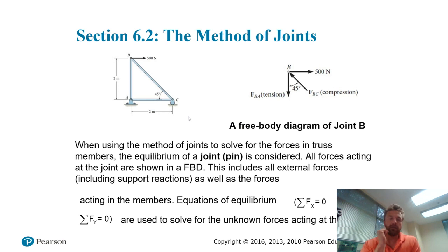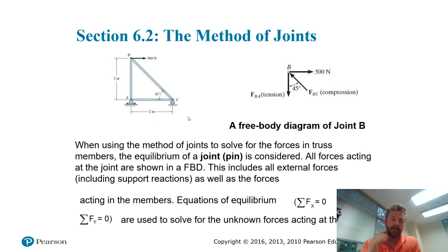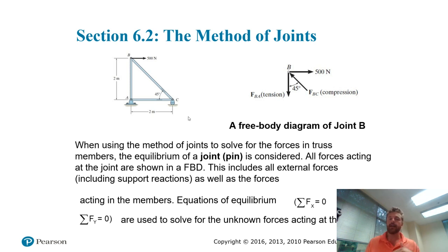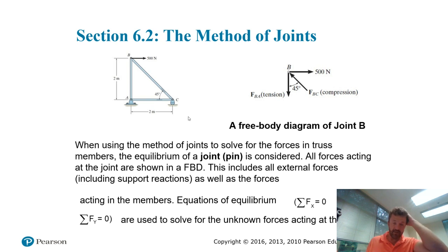The method of joints leverages the fact that if a truss is in equilibrium, every part is in equilibrium — both the members and the pins. Since each pin corresponds to a concurrent force system, I can only write two equations of equilibrium: the sum of all forces in the horizontal direction equals zero, and the sum of all forces in the vertical direction equals zero. Therefore, before solving for equilibrium at any pin, we need to ensure there are only two unknown forces acting on it.